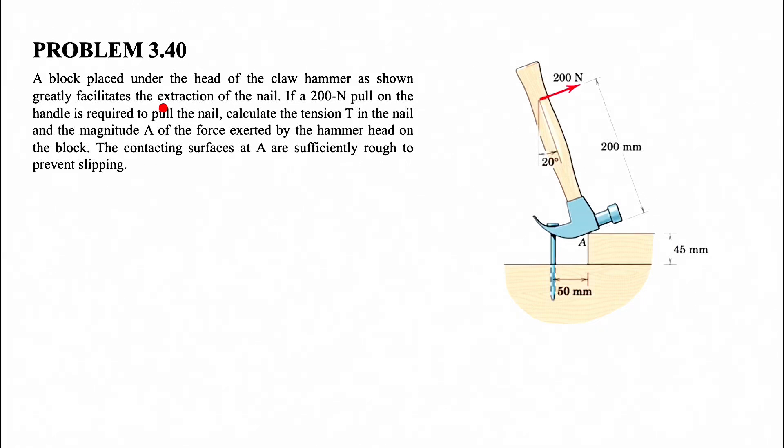All right guys, let's see how we can solve question 40 from the third chapter of the Miriam textbook. We have a block that is placed under the head of the claw hammer, as we can see, in order to facilitate the extraction of the nail.